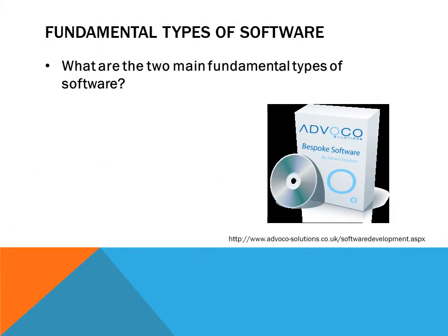When discussing development, we're going to be looking at two main fundamental types of software. What are the two main fundamental types of software? There are off-the-shelf software and bespoke software. We're going to look into both, learn the differences, and which one would be more readily used by which type of people and for what reasons.